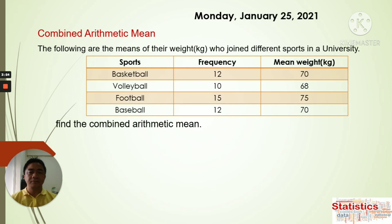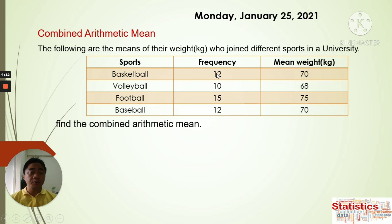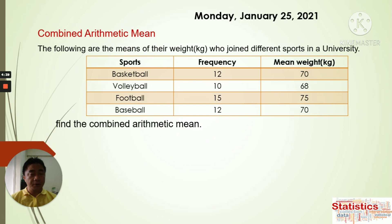Now we go to the next example. The following are the means of weight of people who joined different sports in the university. The sports are basketball, volleyball, football, and baseball. There are 12 people who joined basketball, 10 for volleyball, 15 for football, and 12 for baseball. The average weights are 70 kg, 68 kg, 75 kg, and 70 kg respectively.